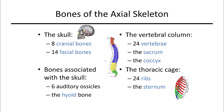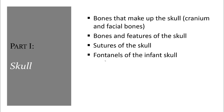Bones of the axial skeleton include the skull, where we'll go through eight cranial bones and 14 facial bones. We have bones associated with the skull, including auditory ossicles as well as the hyoid bone. The vertebral column has 24 vertebrae. In addition, there's the sacrum and coccyx, as well as 24 ribs of the thoracic cage and the sternum. We'll begin with the skull.